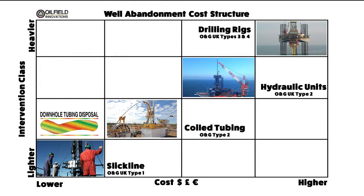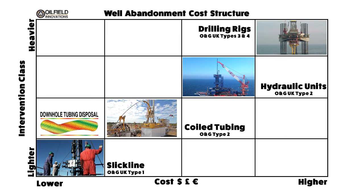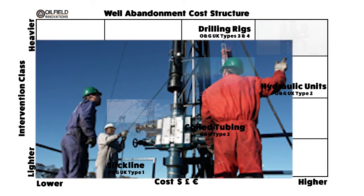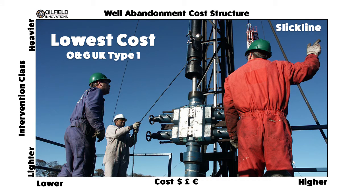This is a conventional oil and gas cost structure for well intervention. Lighter to heavier intervention classes are on the vertical scale and lower to higher cost intervention methods are on the horizontal scale. The oil and gas UK type 1 intervention uses the lightest and lowest cost equipment, which is slickline. Slickline uses wire to lift and lower equipment within a well and can be operated by about three or four people. The cost of placing an abandonment plug with slickline and pumps can be measured in thousands per drum of cement, which is at the lower end of the cost scale, but also is the most environmentally friendly and safest way to abandon an oil and gas well.